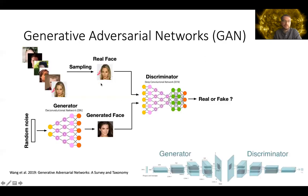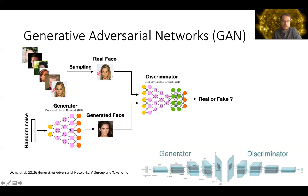How do these GANs work? They are basically a competitive game between a so-called generator network and a discriminator network. Here's an example using celebrity faces. You feed real faces and also generated faces from the generator to the discriminator, and it tries to determine if they are real or fake. In this way, both the generator and discriminator networks are trained to generate more and more realistic faces.